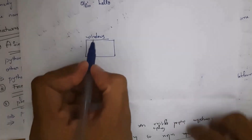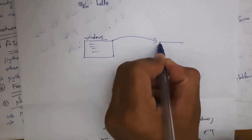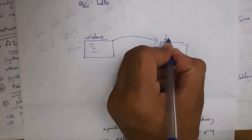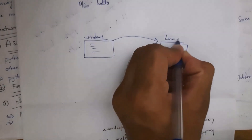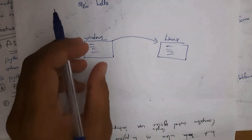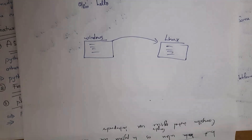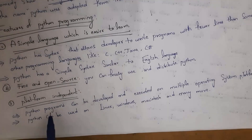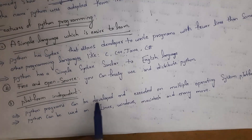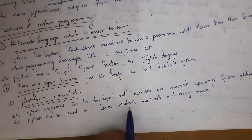The third feature is platform independence. For example, if I write a Python program in a Windows system, I can simply copy that program and run it on Linux — it will work without any issues. Python programs can be developed and executed on multiple operating systems including Linux, Windows, macOS, and many more.